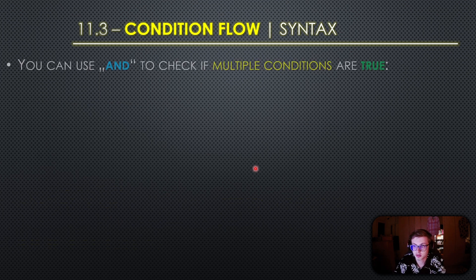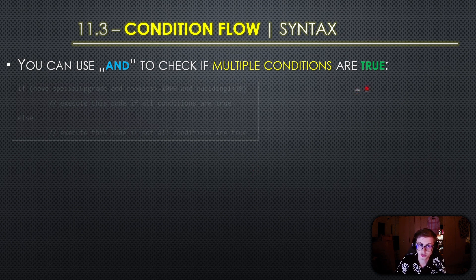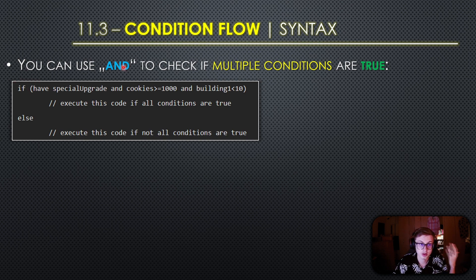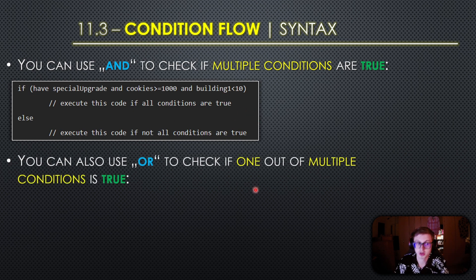You can use the 'and' keyword to combine conditions together, checking if multiple conditions are all true. As we can see in this snippet of code, it checks if you have a special upgrade, and cookies are greater than or equal to 1000, and some building is less than 10. If all of these conditions are true it executes one code block, otherwise it executes the other.